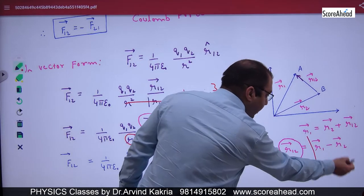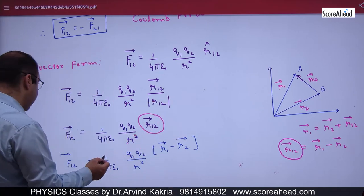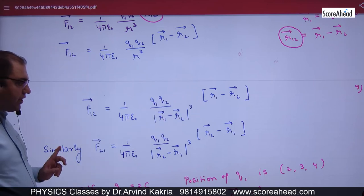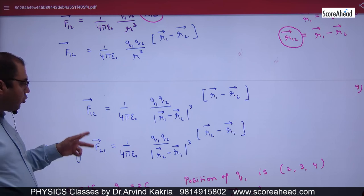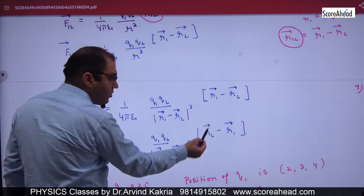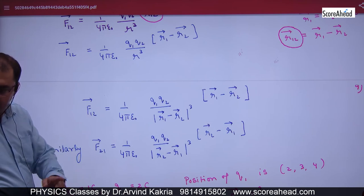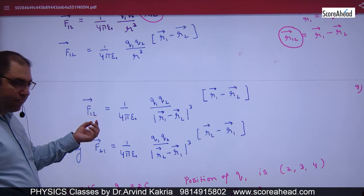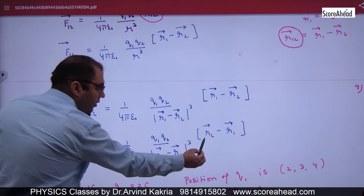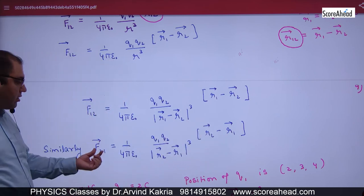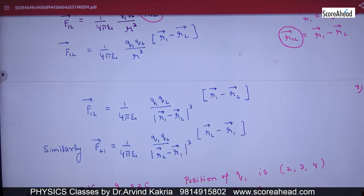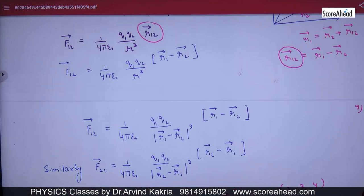Similarly, F21 vector is written by changing the numbering. The trick to remember is: for F12 vector, the displacement vector is R1 minus R2; for F21 vector, it is R2 vector minus R1 vector. Just swap the numbering and it becomes easy to remember.